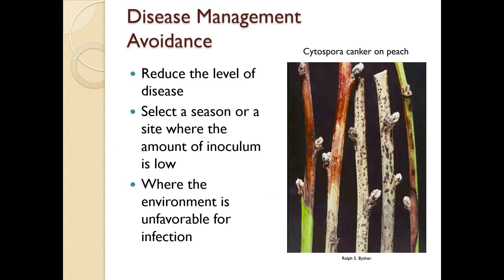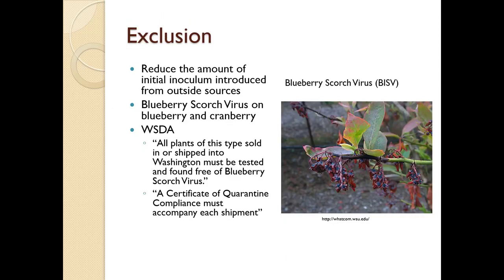When talking about disease management, think about avoidance: reduce the level of disease by selecting a season or site where there's a low amount of inoculum, doing it when the environment is unfavorable for infection. Here we have cytospora canker on peach — it's recommended to do summer pruning on peach because you get extended dry periods. If you have water in the area and this disease, you're going to be spreading it from one tree to another. Exclusion is reducing the amount of initial inoculum introduced from outside sources. Here we have blueberry scorch virus, which affects blueberry and cranberry — anything brought into Washington state must have a certificate of quarantine compliance accompanying each shipment.